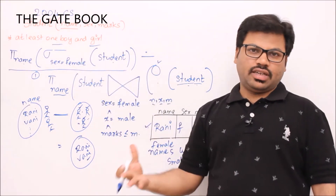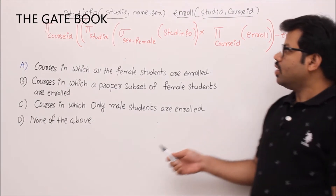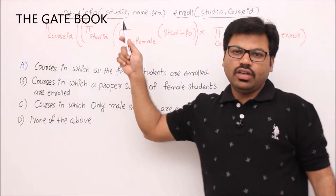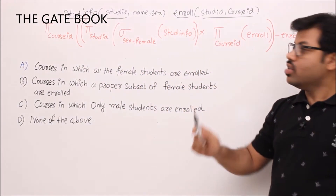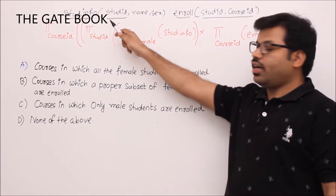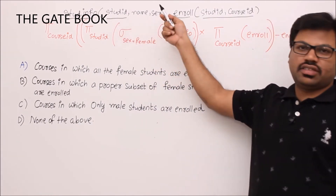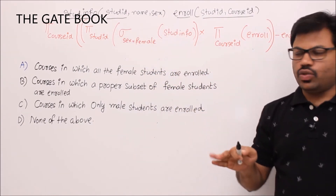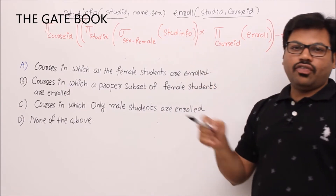The divide-and-conquer approach makes complex queries easy to understand. Now for another GATE question: student_info is a table with student ID, name, and sex containing both female and male students; enroll is a table with student ID and course ID.